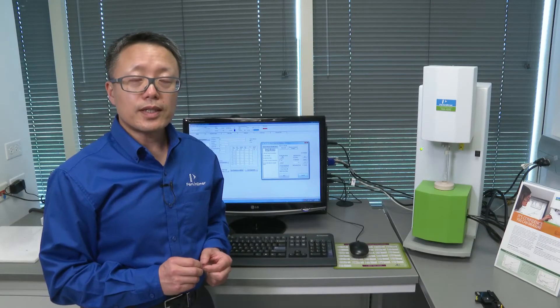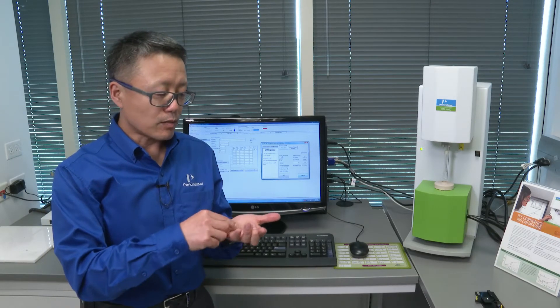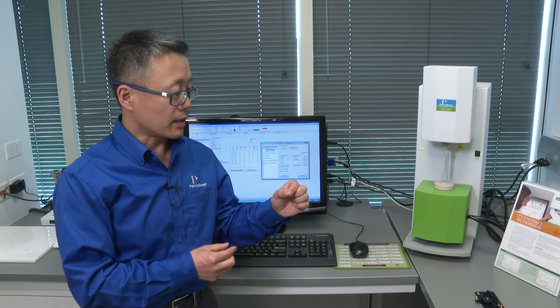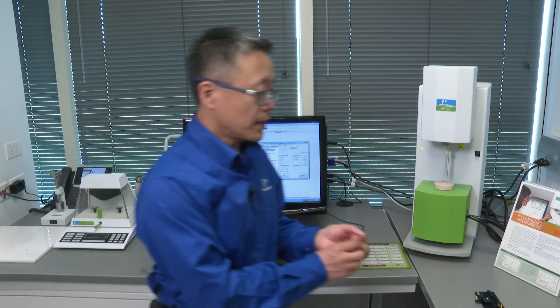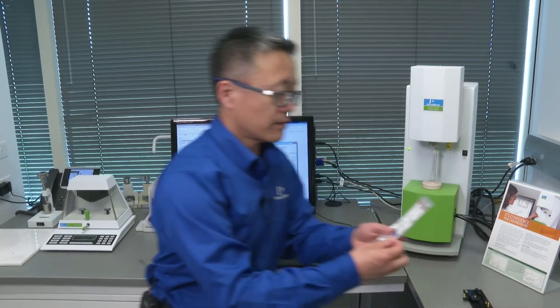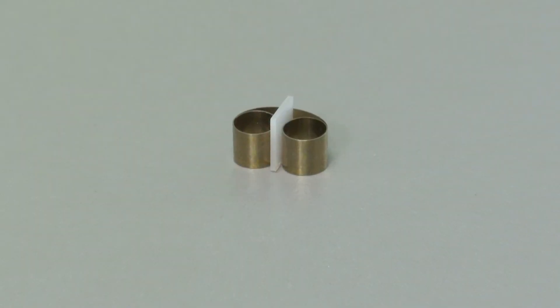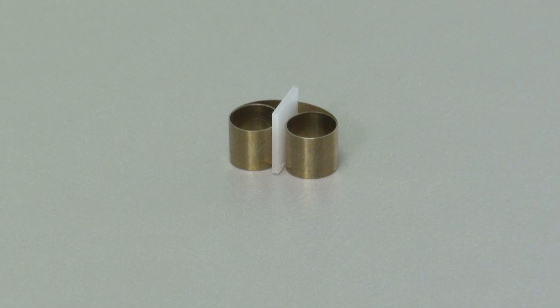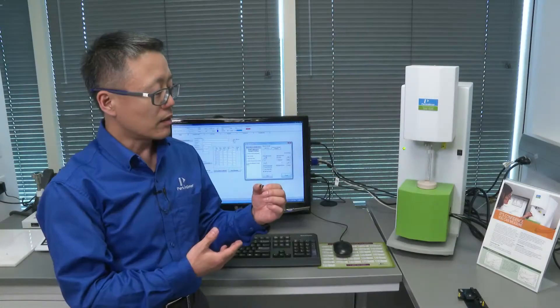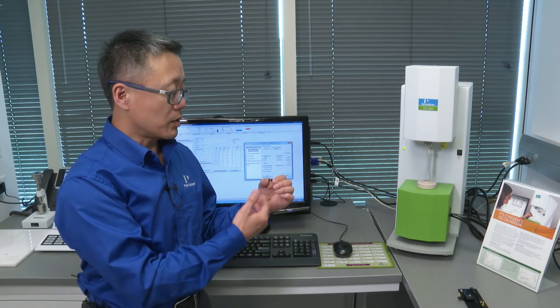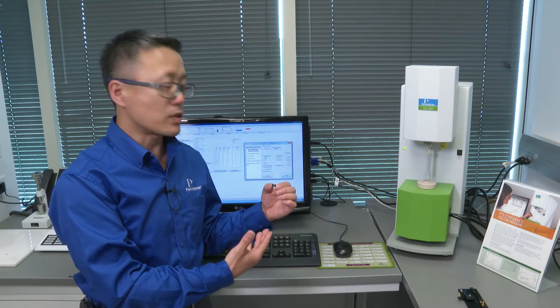When you want to measure the CTE on the X or Y direction, you have to turn the sample up like this. Then you will need a fixation clip, something like this, to hold the sample upright. These kinds of clips are commonly used for SEM or FTIR samples to hold the sample up so you can look at the cross section. But now we can use it also for the TMA sample measurement.